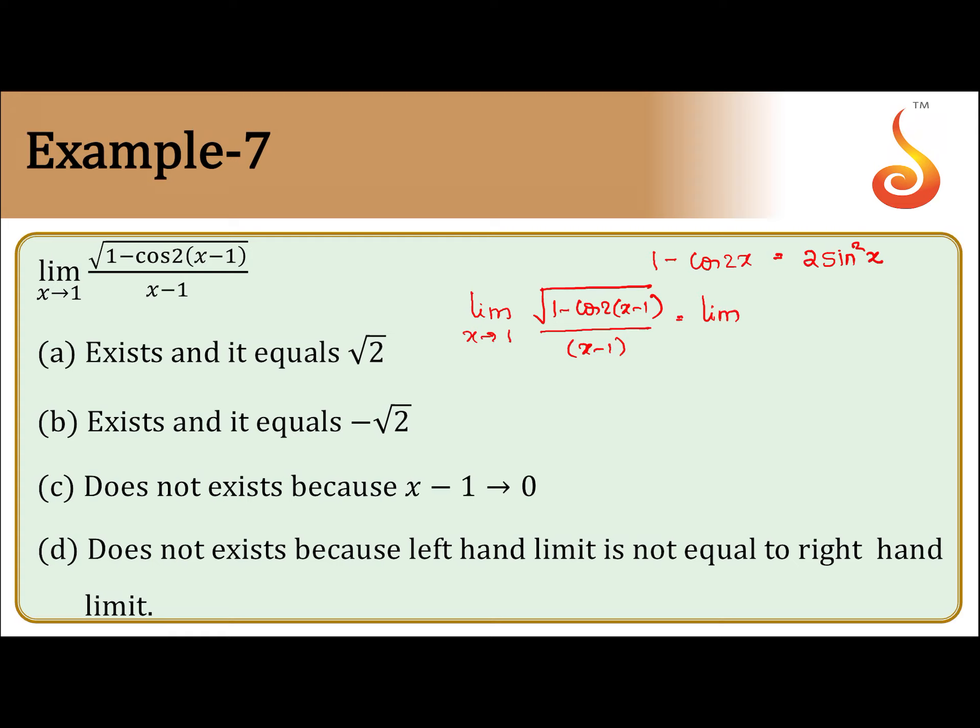This is limit x tending to 1, which is nothing but root 2 mod sin(x-1) divided by (x-1). Generally students make mistakes here. What is the concept we used? The concept is: under root of x square is equal to mod x.